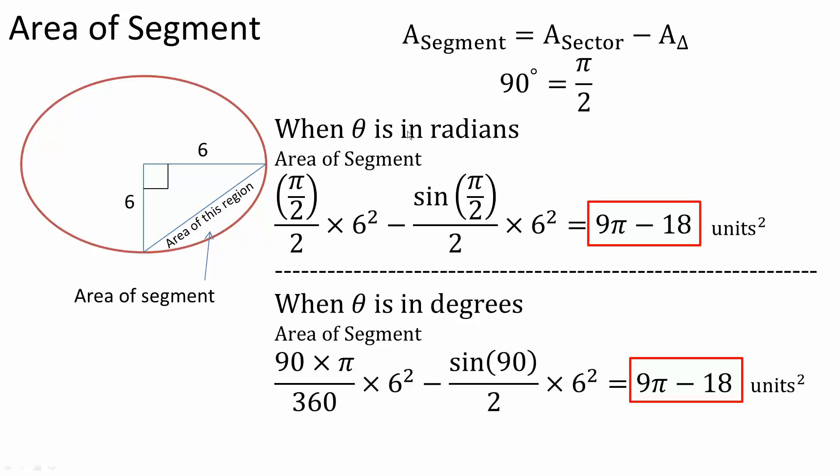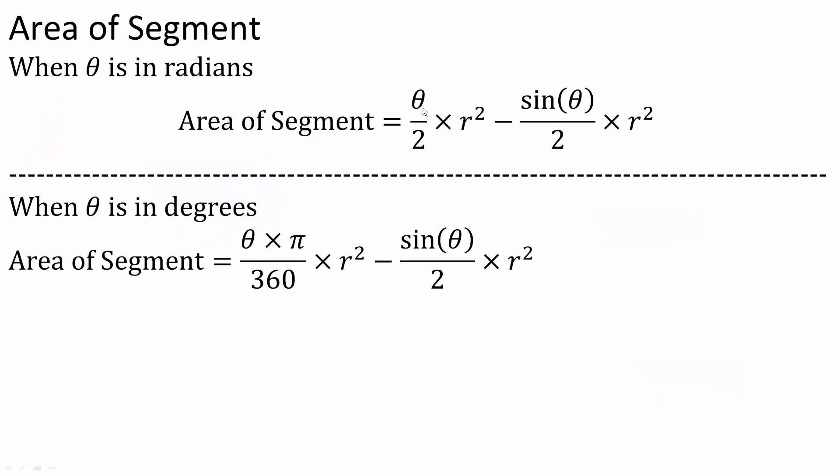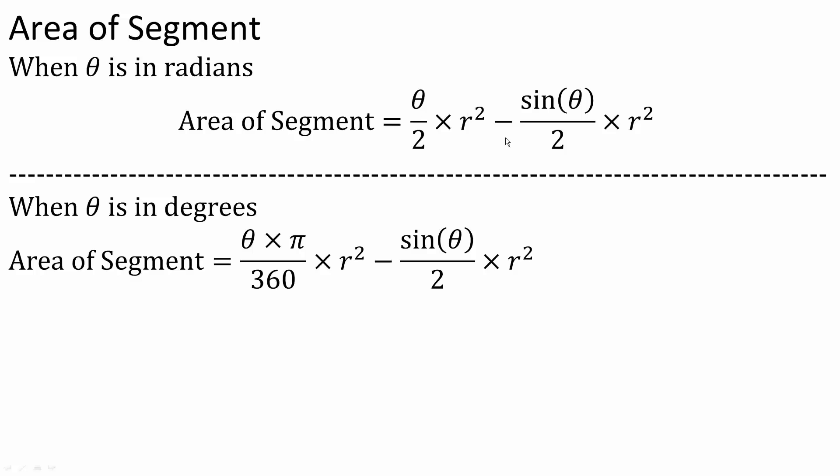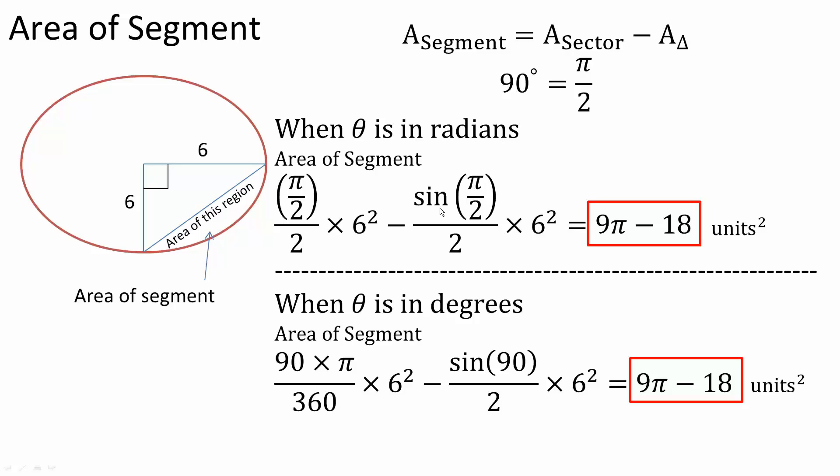So first we will solve in terms of radians. So theta will be pi over 2, divided by 2, times r, we said r is 6. So times 6 squared, minus sine of pi over 2, divided by 2, times r, which is 6, 6 squared. So this is what we have right here. Use a calculator, you would get 9 pi minus 18 units squared.